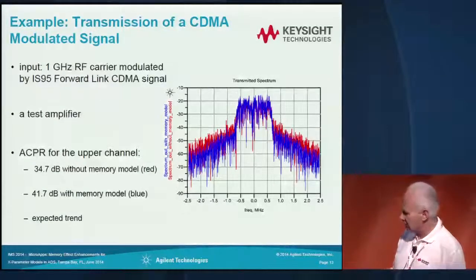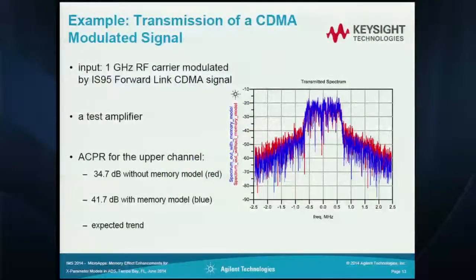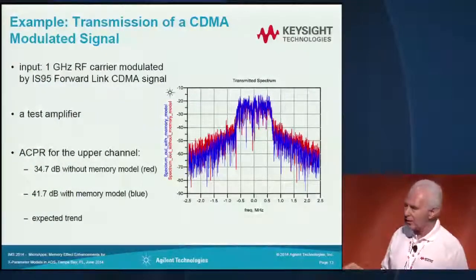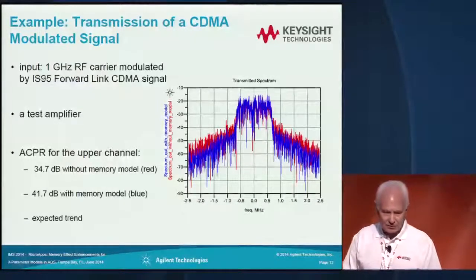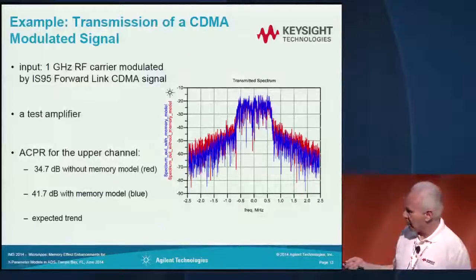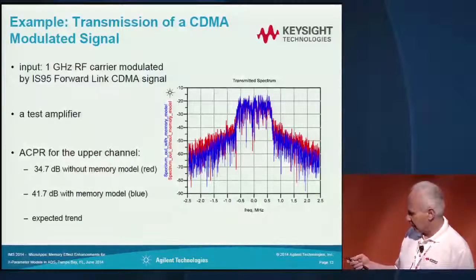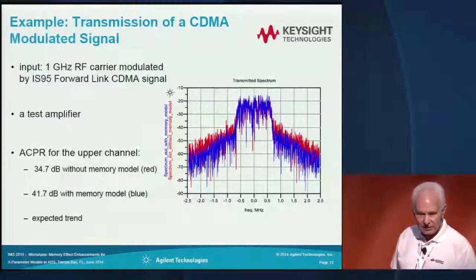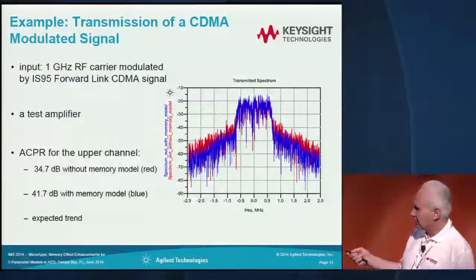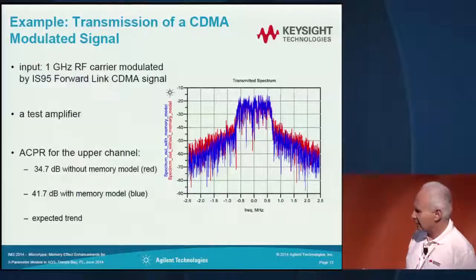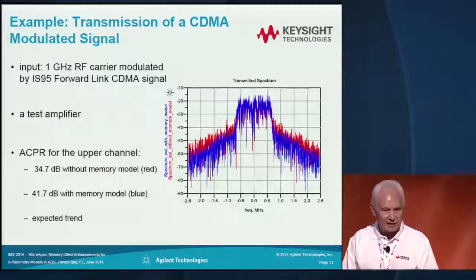The first example shows ACPR measurement on an amplifier. A CDMA signal is passed through the amplifier. The blue spectrum shows the response of the model with memory effects, while the red one shows the model response without the memory model. The ACPR values differ by about 7 dB, and importantly, this is in the right direction — the expected trend — so the model is really enhanced and improved.